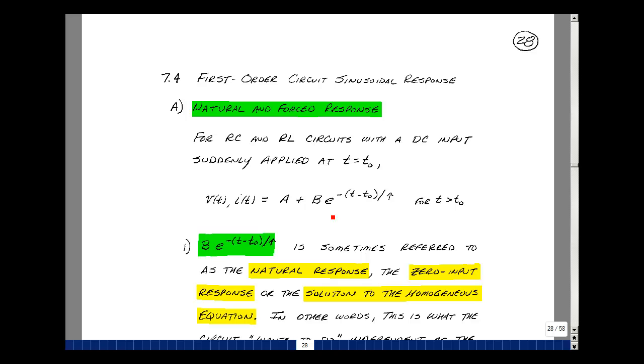This term here, B times E to the minus T minus T0 over tau, is sometimes called the natural response, the zero input response, or the solution to the homogeneous equation. In other words, this is what the circuit wants to do independent of what we apply to it.